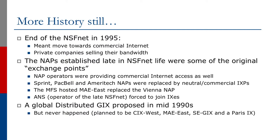A distributed global Internet exchange was proposed in the mid-90s, but this never happened. It was planned to include CIX West, MAE East, the new Swedish exchange point, and a proposed interconnect in Paris.